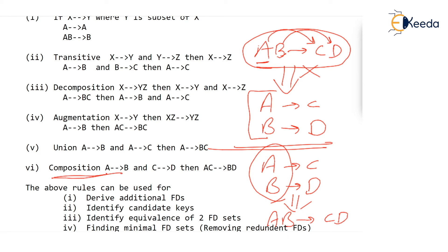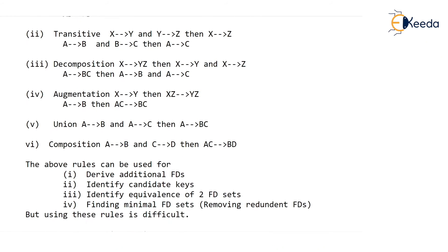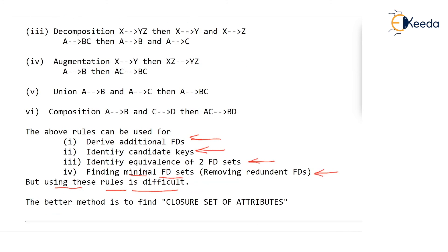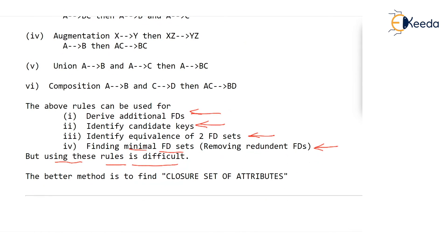These six rules can be used for solving our four problems described at the beginning of the lecture: deriving additional FDs, identifying candidate keys, identifying equivalence of two FD sets, and removing redundant FDs and finding minimal FD sets. But using these rules is really difficult. Instead, we will be using another method called closure set of attributes, which we will look at in the next video. Thank you very much.